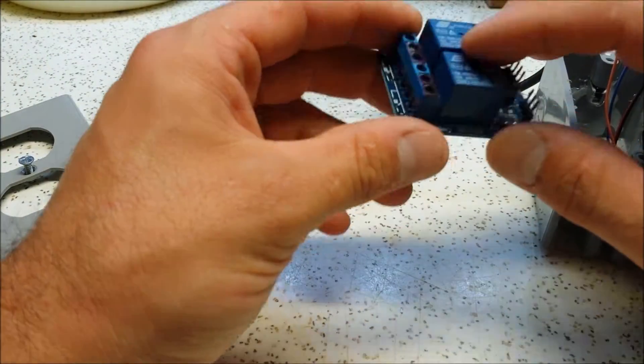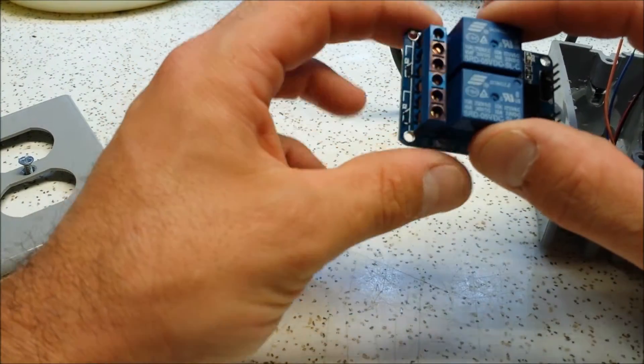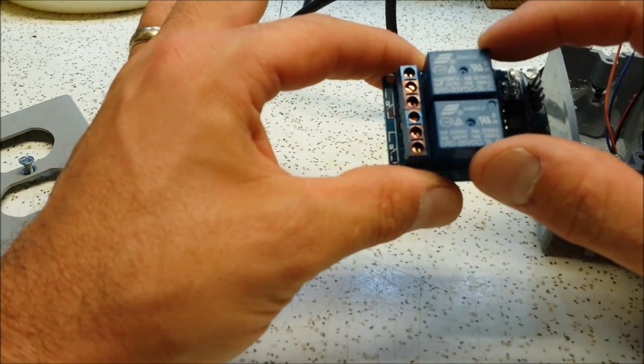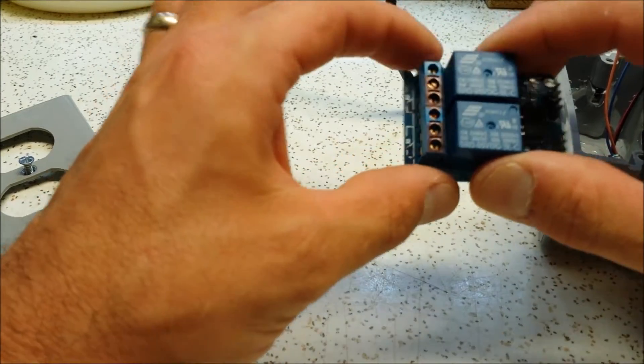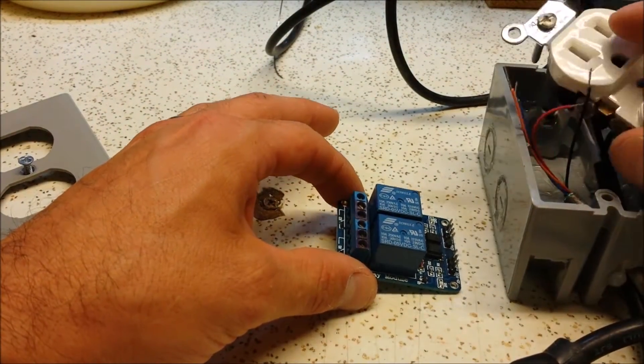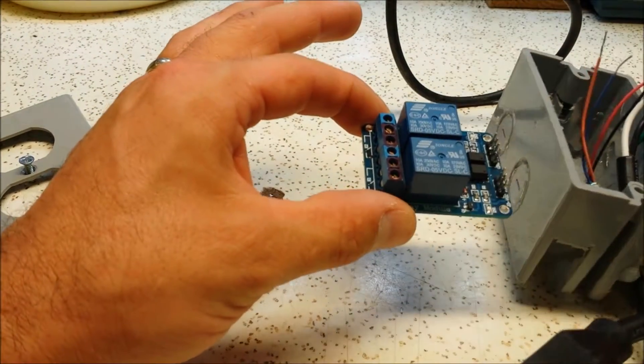Now one of the relays I'm going to set up is normally closed. And what that means is that while the relay's in its off state or de-energized, it's going to allow electricity to flow from the plug out to the outlet. So that when you write it high, it'll actually turn the device off.